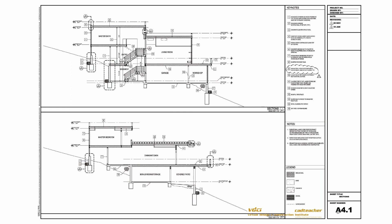These are slices through the building. You can see that we have keynotes that call out specific things, and here's the keynote list. We have datums that show the elevations of different components, and you can see here that this is a reference to an enlarged section.